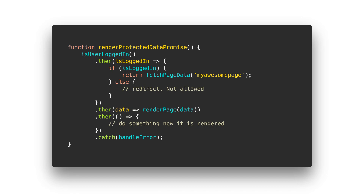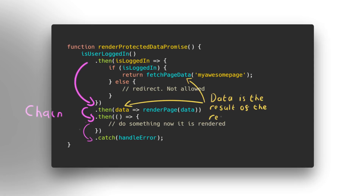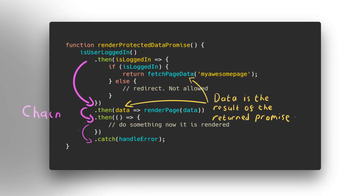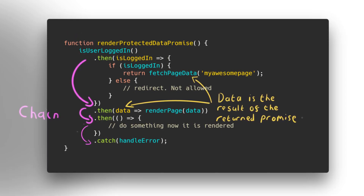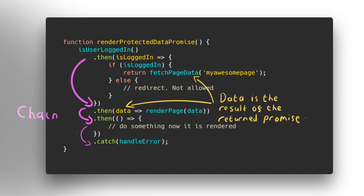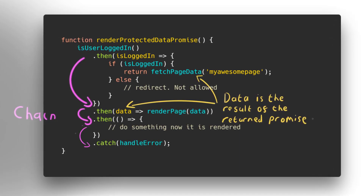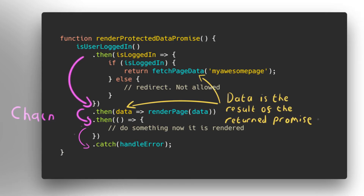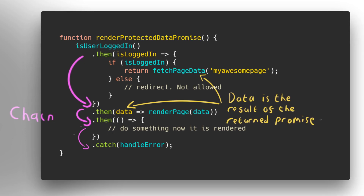You can chain promises together. Whatever you return from one then function will get passed in as an argument to the next one. And if you return a promise from a then function, it will wait for that promise to resolve before calling the next then in the chain. If anything goes wrong during the promise chain, we skip directly to the catch function and handle the error there. This allows us to centralize error handling instead of having it sporadically dotted around.